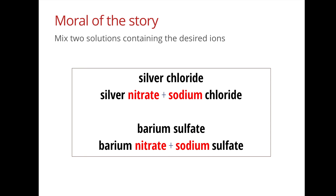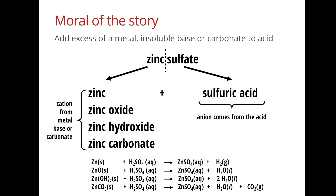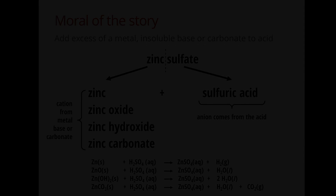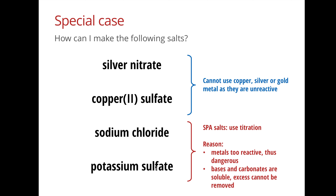For the reaction with acids method — for example, zinc sulfate — the anion comes from the acid, so sulfate means we need sulfuric acid. The cation comes from the metal, metal oxide, hydroxide, or carbonate. This applies to all soluble salts except group 1 and ammonium salts. Note special cases: for silver nitrate or copper(II) sulfate, you cannot use the metal because these metals are unreactive. For group 1 salts, we cannot react the very reactive metal with an acid — we must use titration.